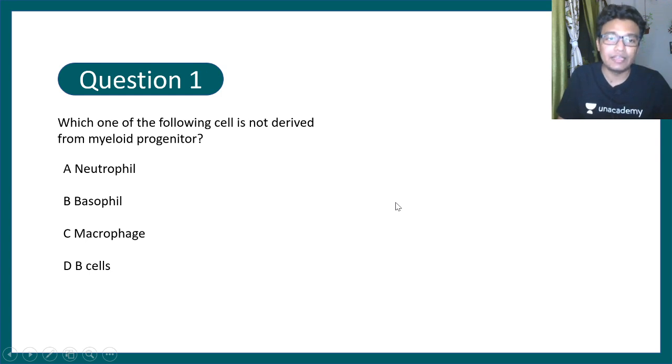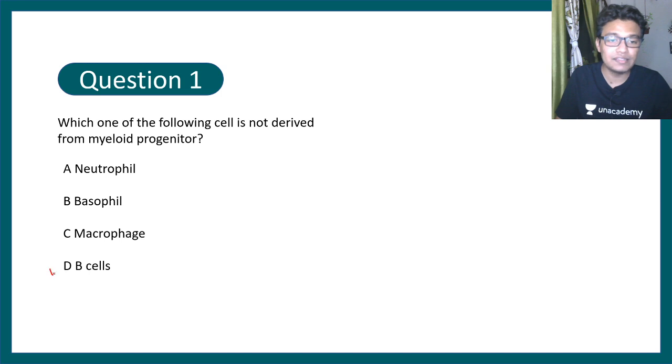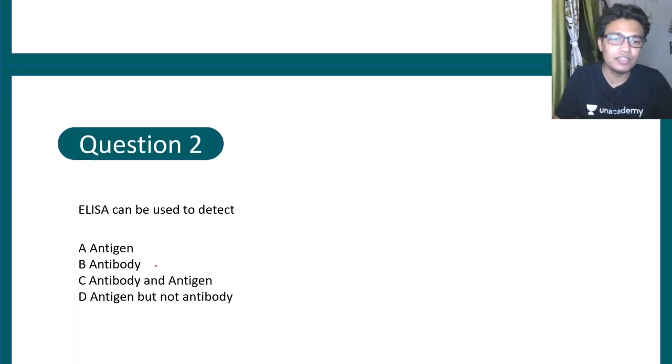If you want to solve this question, the correct answer would be option D, because B cells and T cells are lymphoid progenitor derivatives. If you don't know what lymphoid or myeloid progenitors are, go to the i button and click on the corresponding video.